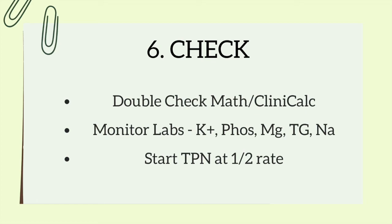You'll want to check your numbers to make sure you didn't miss a step, and you can also check online at Clinicalc. I really recommend getting this down by hand first, checking your numbers yourself and getting practice, and then start using Clinicalc. Before administering, you'll also want to check the patient's potassium, magnesium, phosphorus, sodium, and triglyceride labs. If any labs are abnormal, fix these before starting the TPN. Start the TPN at half the goal rate — so if your goal rate was 65 milliliters per hour, divide by half. I'll round down to 30 milliliters per hour to make it easy.